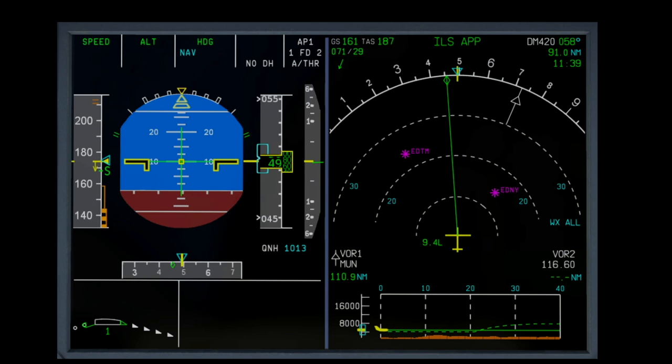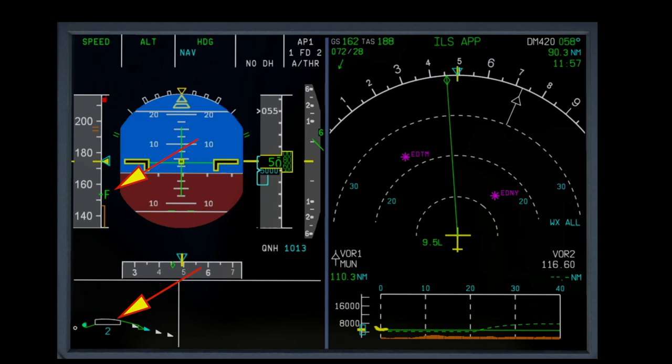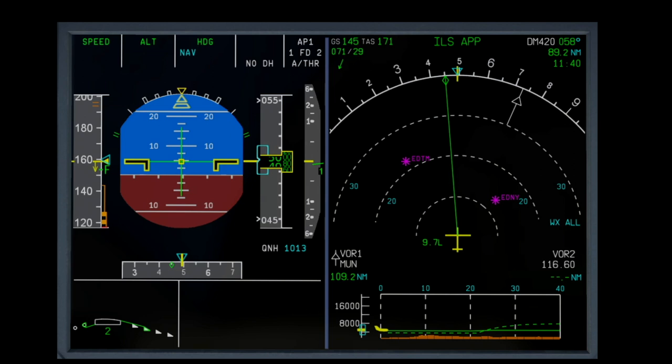I reduce the speed further and select config 2. Again, VLS and V-alpha prot reduce in conjunction with the angle of attack reduction.